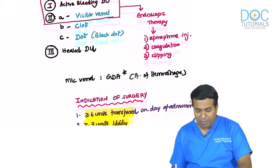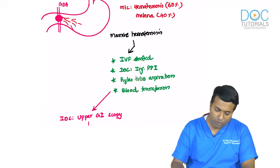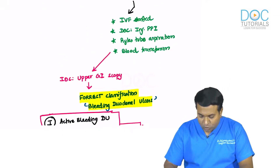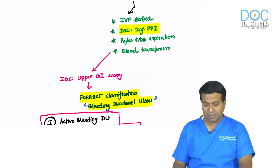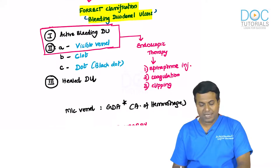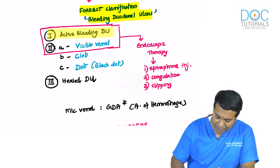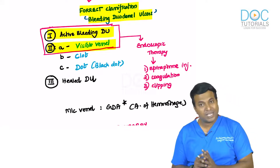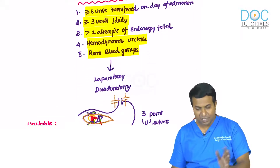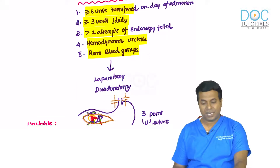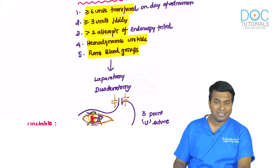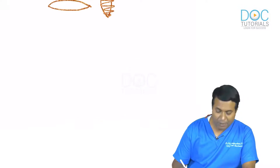To summarize bleeding duodenal ulcer: bleeding is usually from the gastroduodenal artery. Drug of choice is IV PPI. Investigation of choice is upper GI endoscopy with Forrest classification. Type 1 and 2A need endoscopic therapy. Key surgical indications: ≥6 units on admission, 3 units/day, 2 failed endoscopies, hemodynamic instability.